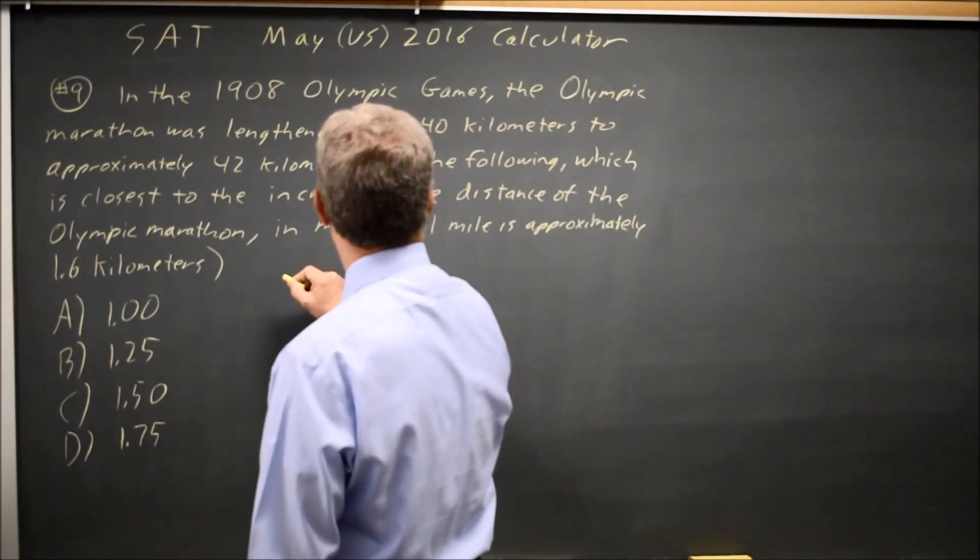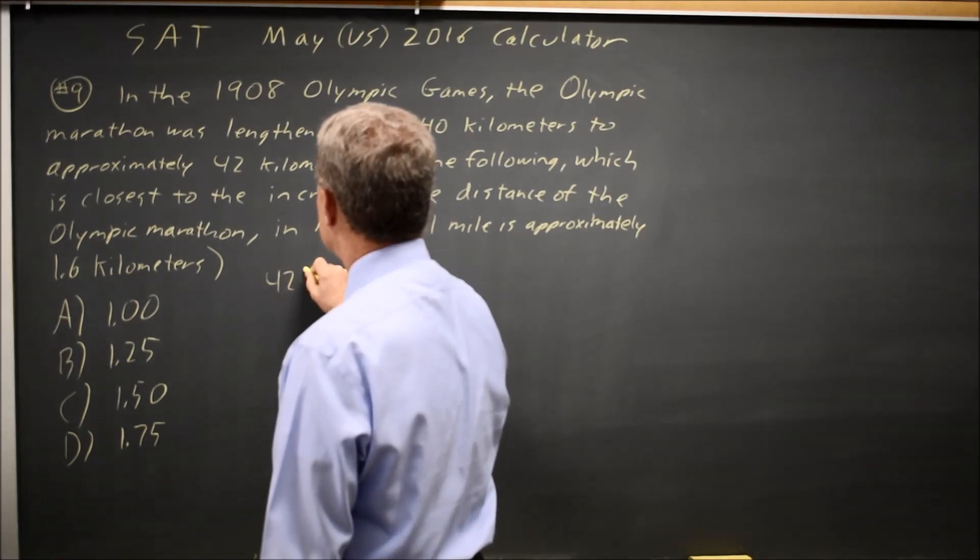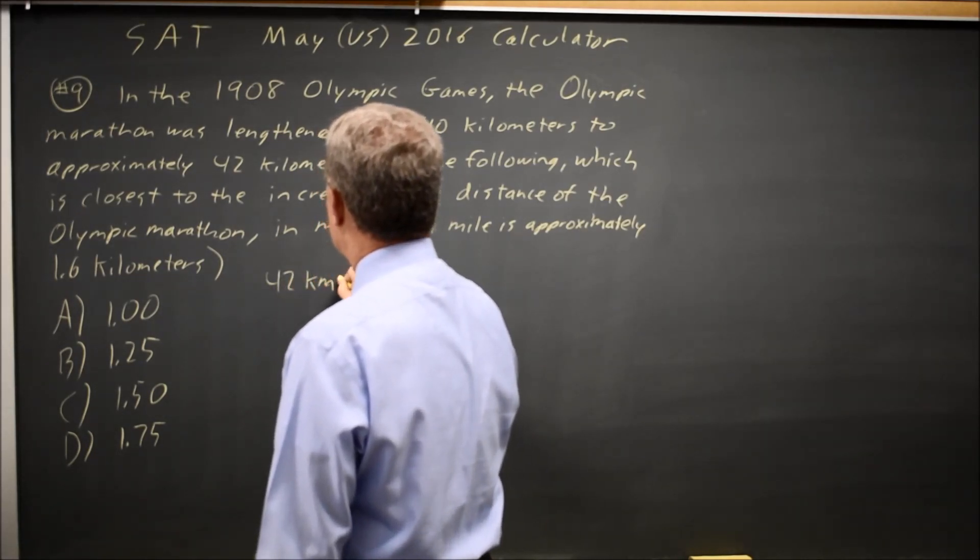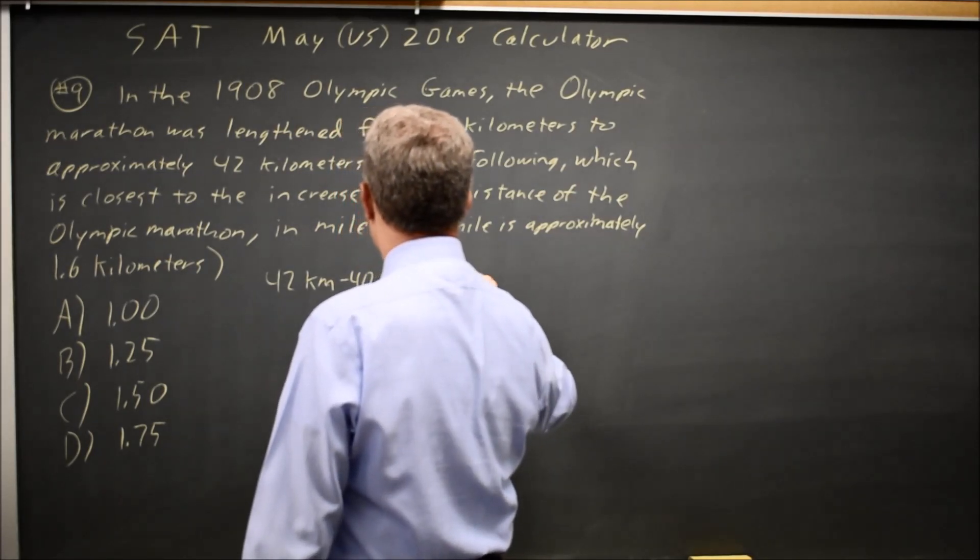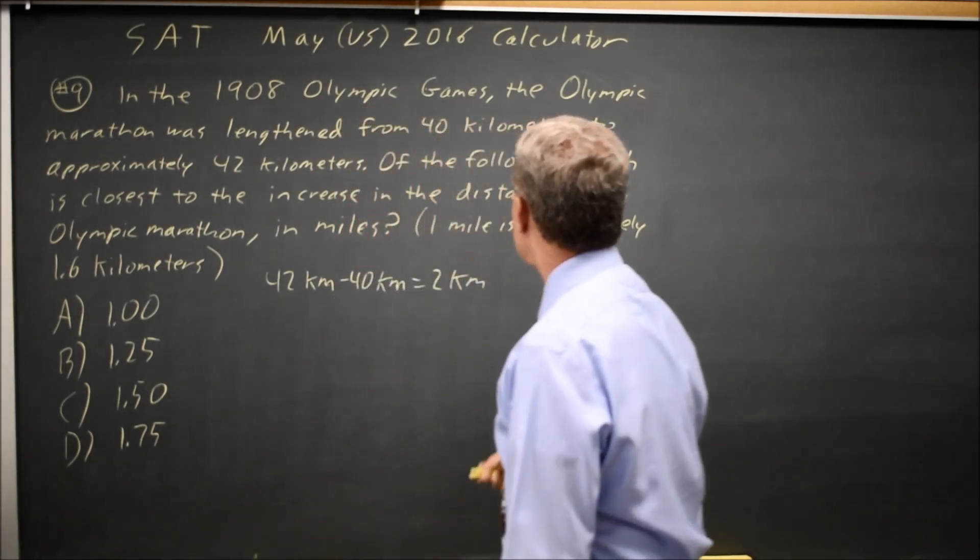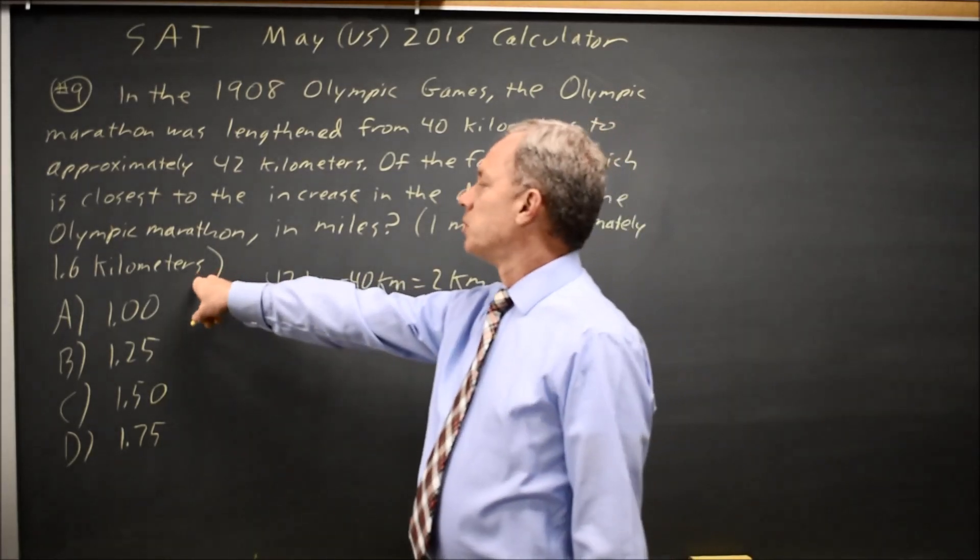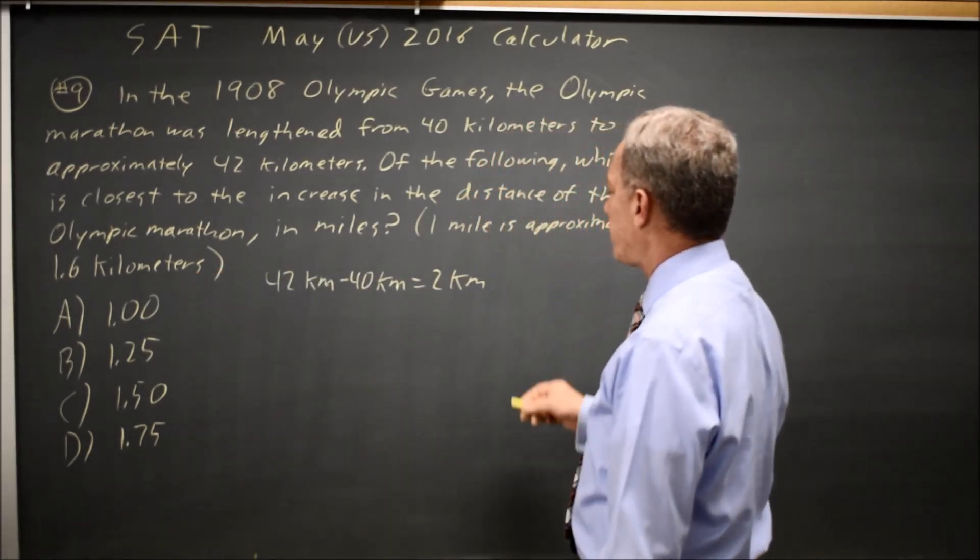So the increase in the marathon is 42 kilometers minus 40 kilometers, which is 2 kilometers. And we're told 1 mile is approximately 1.6 kilometers and we want our answer in miles.